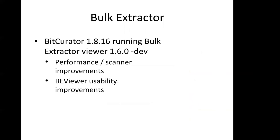One thing that may not be initially apparent to users in the BitCurator environment is that bulk extractor is an independent piece of software that is still under development. In other words, an earlier version of BitCurator is likely to implement an earlier version of bulk extractor. The current BitCurator release of 1.8.16 uses version 1.6.0-dev of bulk extractor. There are incremental improvements to how the particular scanners work and improvements to the bulk extractor viewer.